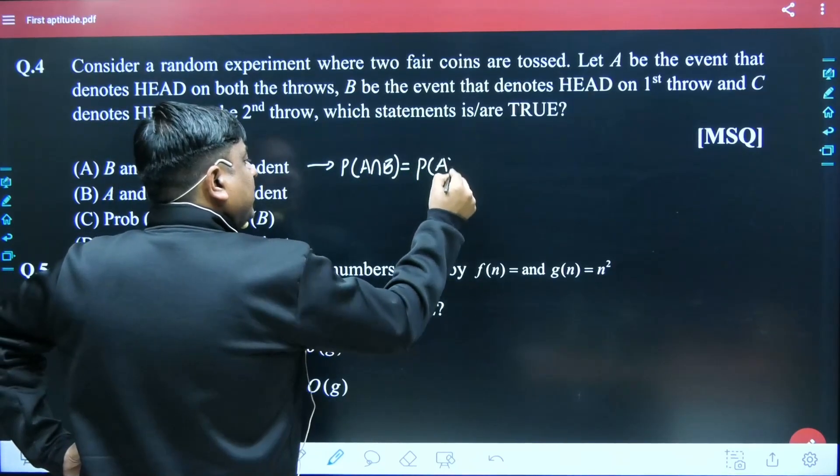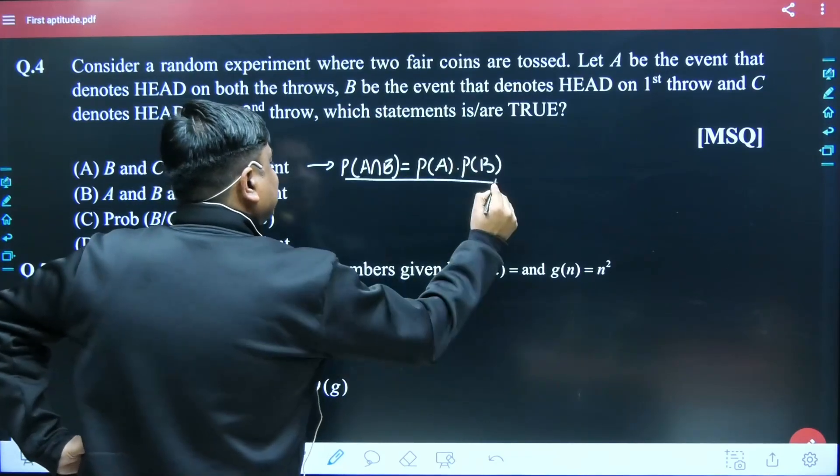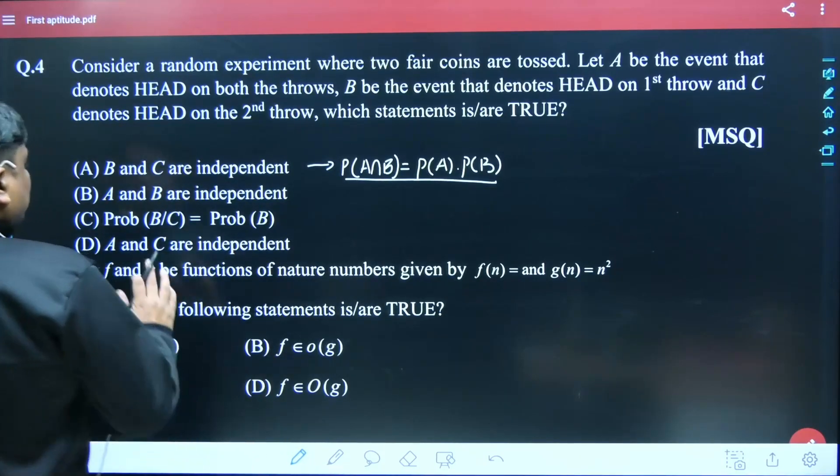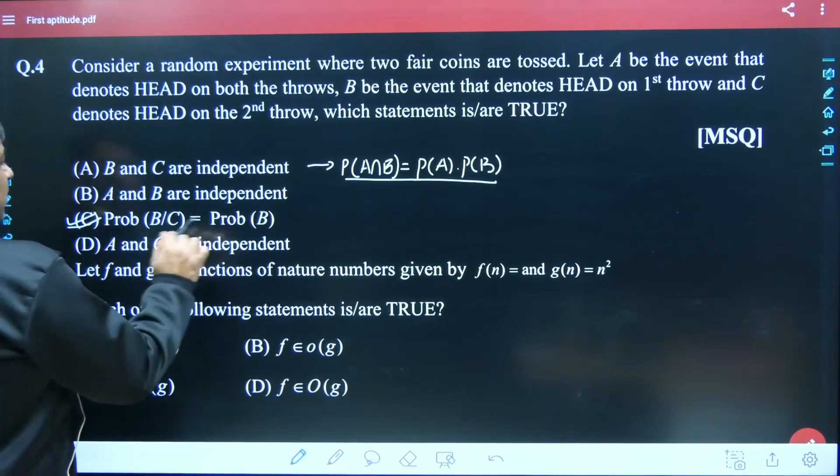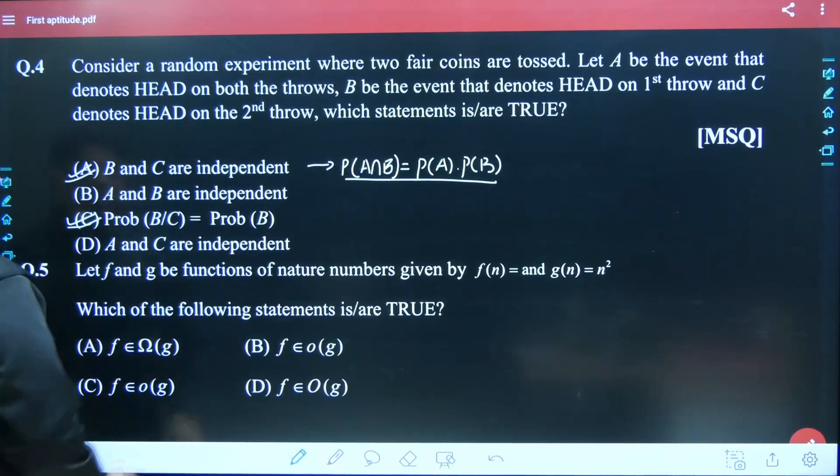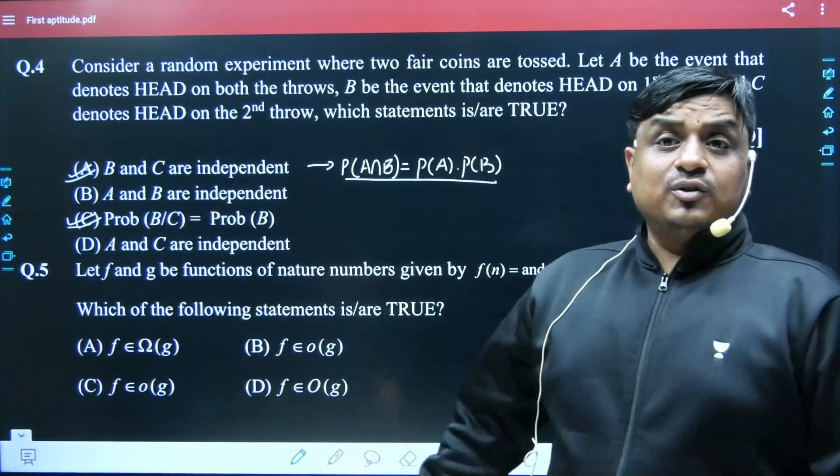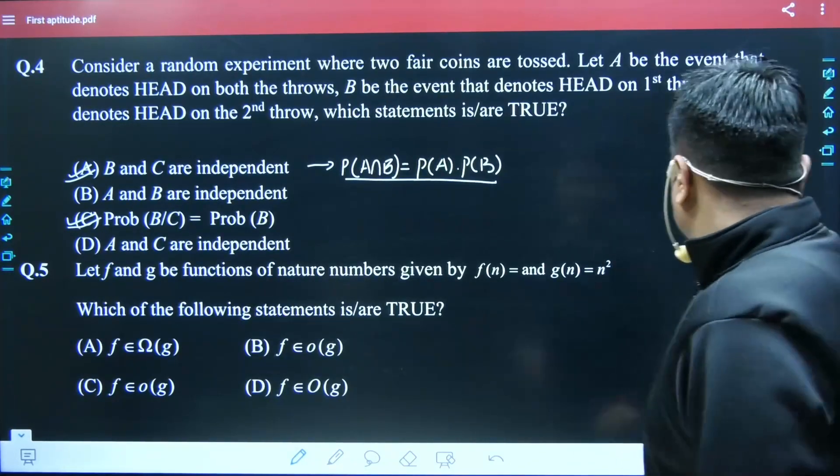...stands for P(A) × P(B), that's done. If it has been satisfied, the given events A and B are independent events. Probably B and C, probably A and C were correct answers. In future you can expect this kind of question.